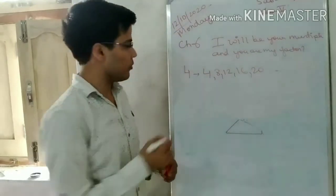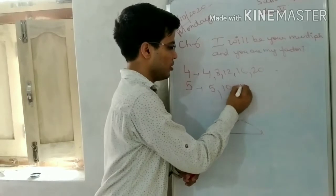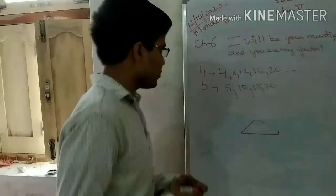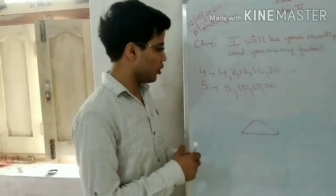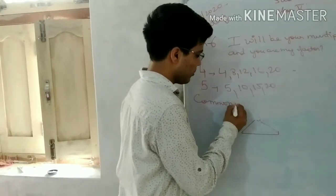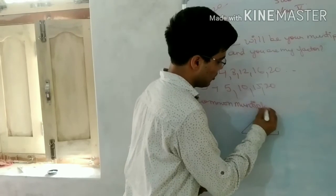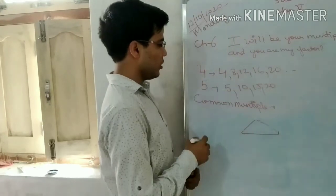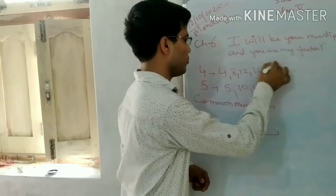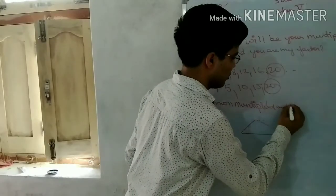In the same way, to find the multiple of 5, you will have the table of 5: 5, 10, 15, 20 and so on. Now we will see the common multiple, which we also discussed in the last video. As you can see, 20 is present in the table of 5 and also of 4. So the common multiple of 4 and 5 is 20.